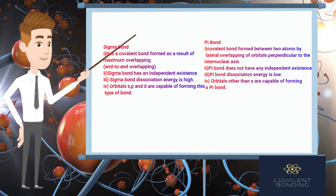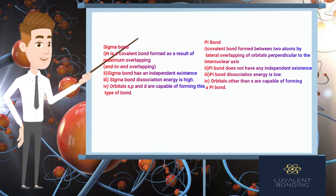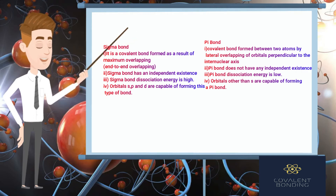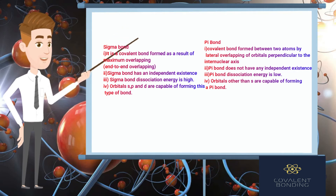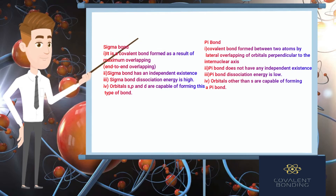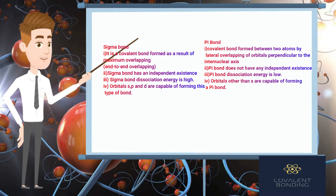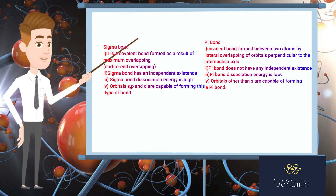A sigma bond is a covalent bond formed as a result of maximum end-to-end overlapping of s-s, s-p, and p-p orbitals along the internuclear axis. Due to the greater extent of overlapping, this results in a strong bond. A pi bond is a covalent bond formed between two atoms by lateral overlapping of orbitals perpendicular to the internuclear axis. Due to the lesser extent of overlapping, this results in a weak bond. Sigma bond has an independent existence, while a pi bond does not — it can only form after a sigma bond. Sigma bond dissociation energy is high; pi bond dissociation energy is low. Orbitals s, p, and d are capable of forming sigma bonds, while orbitals other than s are capable of forming pi bonds.